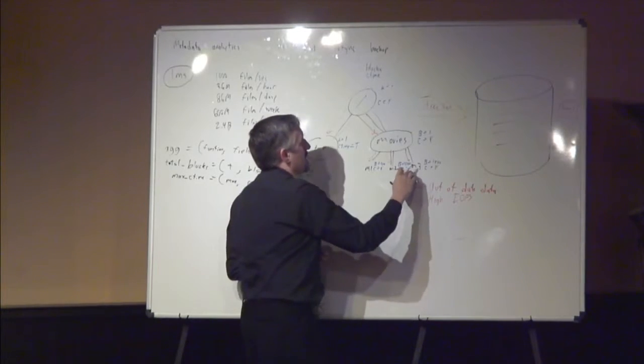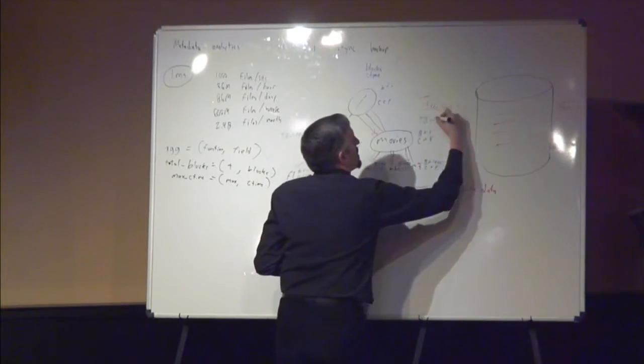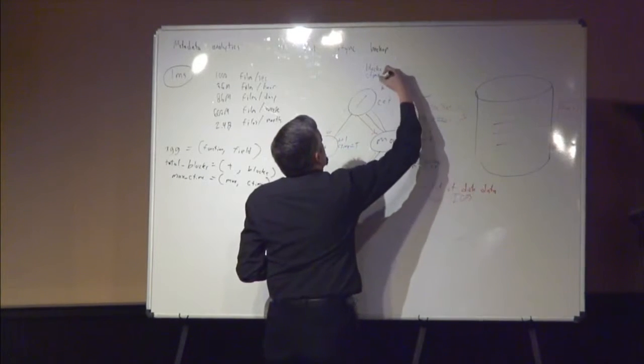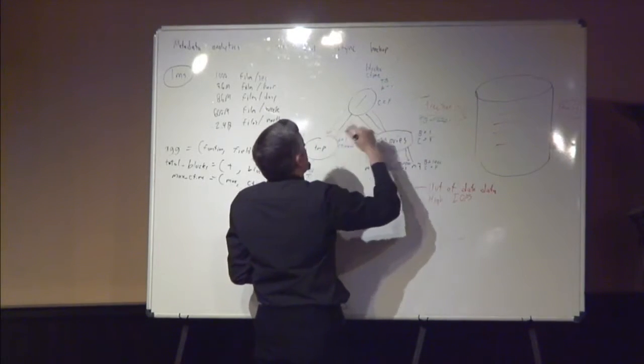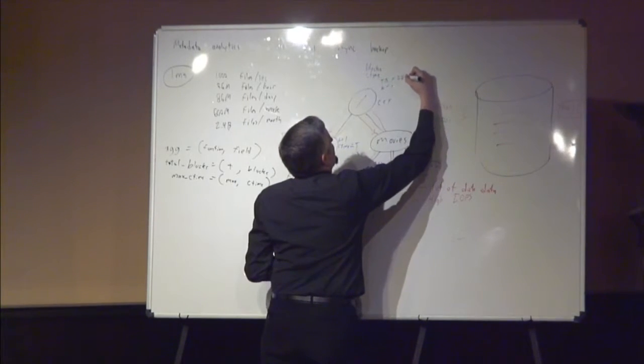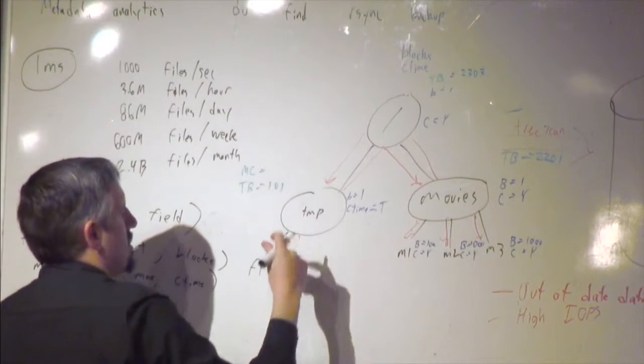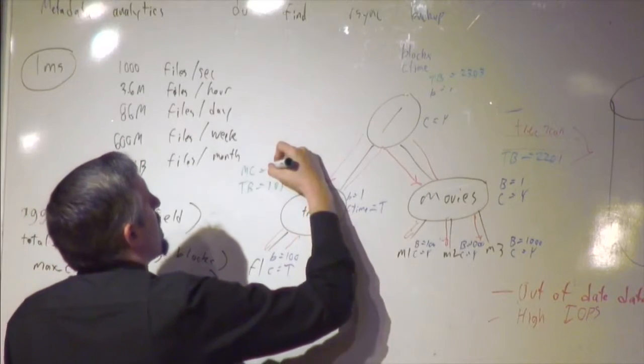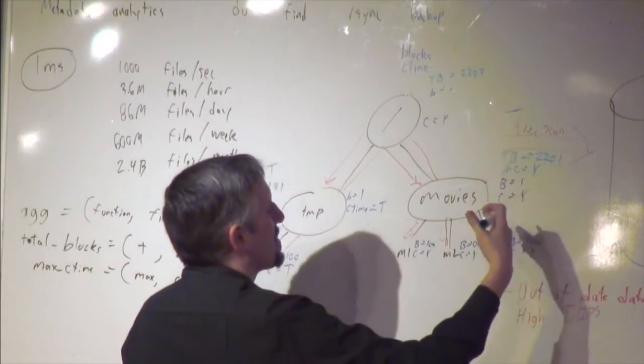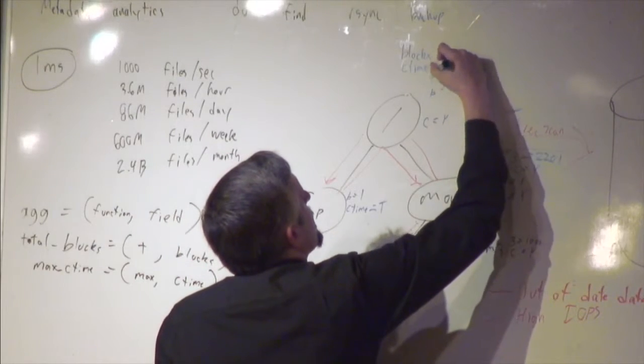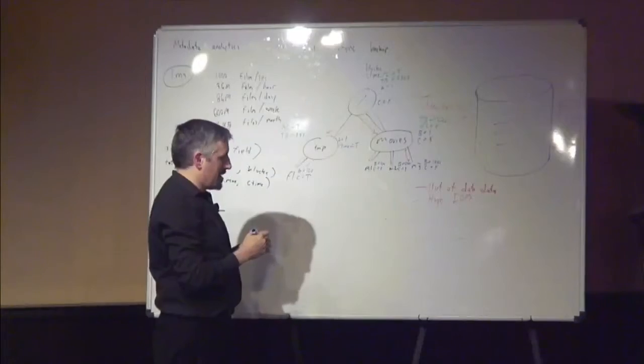For temp, the aggregate for total_blocks is the sum of the two items, which would be 101. The aggregate for movies for total_blocks would be 2,201. The total blocks here is 2,303. The max ctime for temp is today. The max ctime for movies is yesterday - that's the newest one we see. And the max ctime at the root is today.